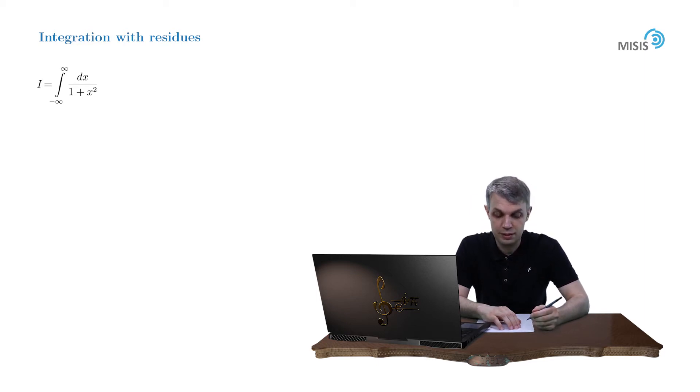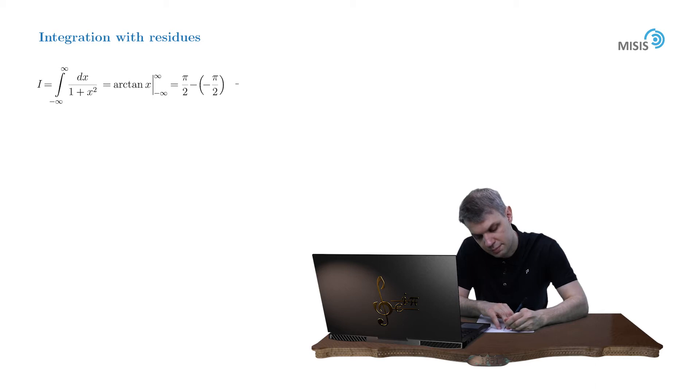Some of you may probably even remember the anti-derivative, which is arctangent. Or others may take this integral using the trigonometric change x equal to tangent of t. Anyway, the integral is equal to the difference of its anti-derivative arctangent of x at plus infinity and minus infinity, which is pi by 2 minus negative pi by 2, which gives us pi.